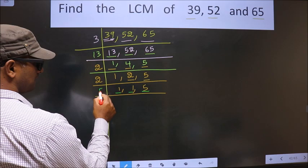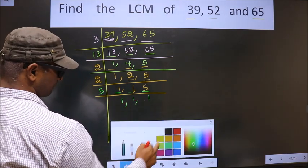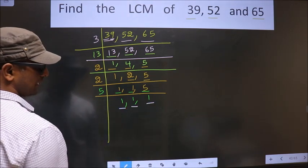5 is a prime number, so we take 5 once is 5. Now we got 1 in all the 3 places.